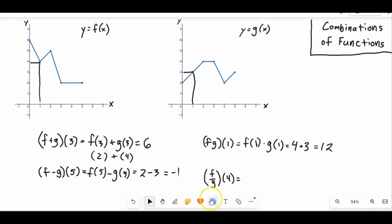And lastly, we will now look at f over g. f over g of 4 is just simply going to be f(4) divided by g(4). So let's go find out what f(4) is. So here's 4, we're going to go up here, and it looks like f(4) is 2.